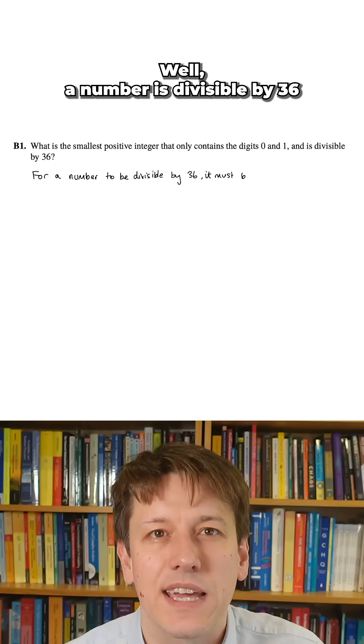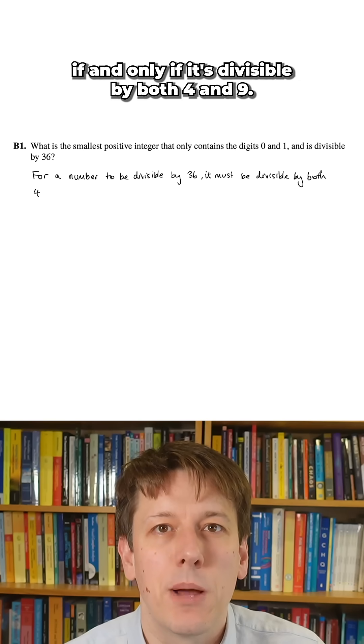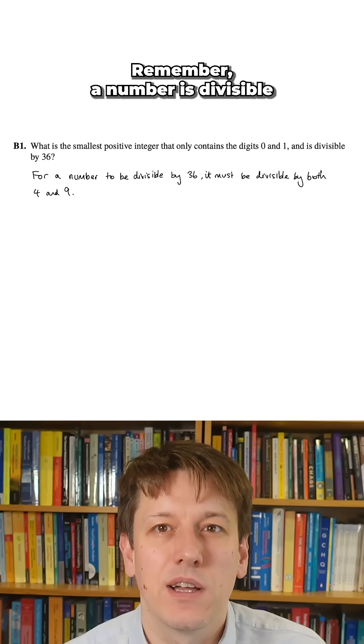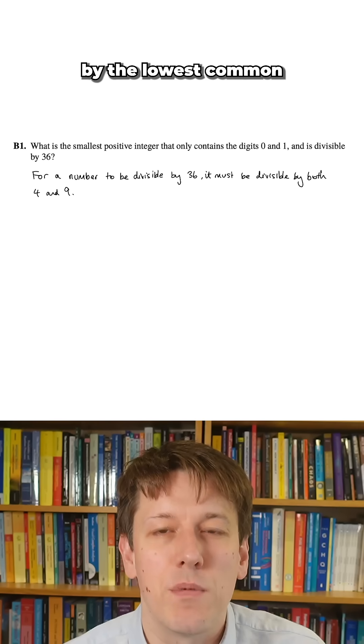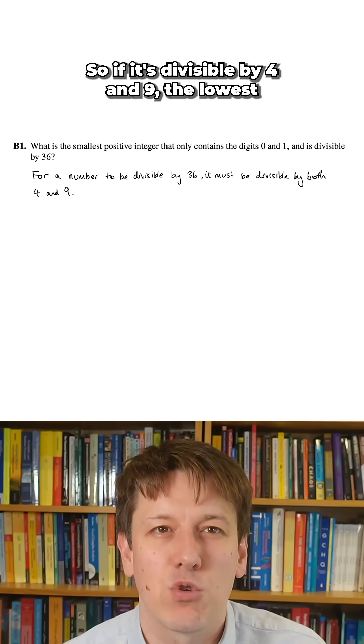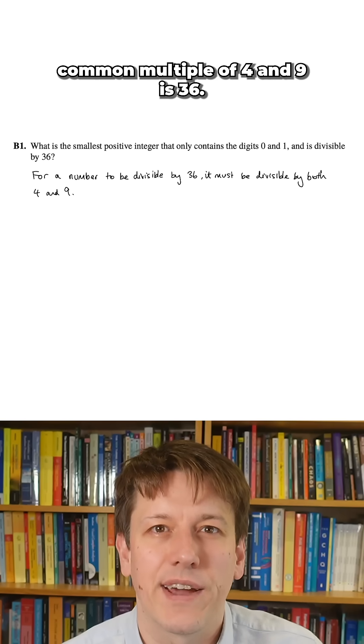A number is divisible by 36 if and only if it's divisible by both 4 and 9. Remember, a number is divisible by the lowest common multiple of other numbers it's divisible by, so if it's divisible by 4 and 9, the lowest common multiple of 4 and 9 is 36.